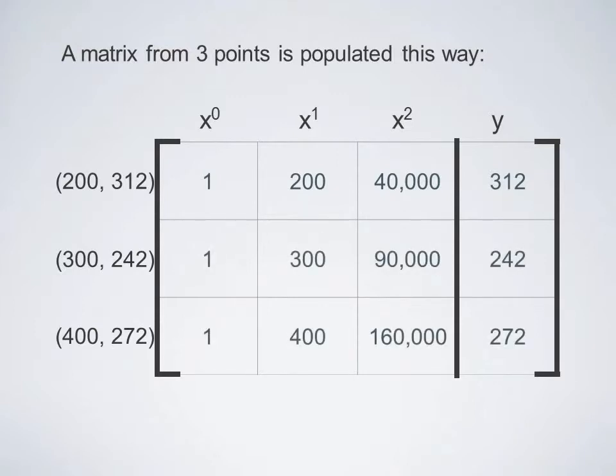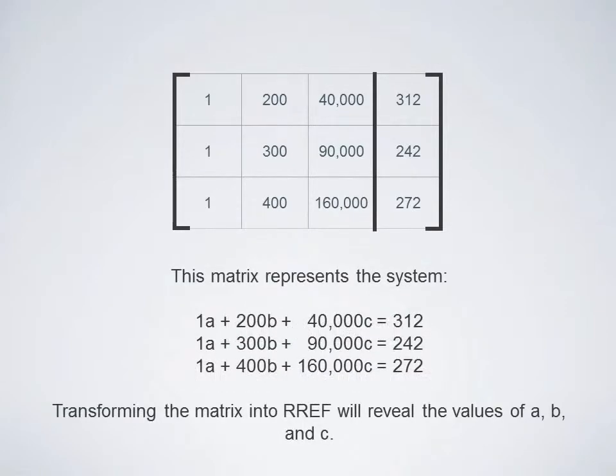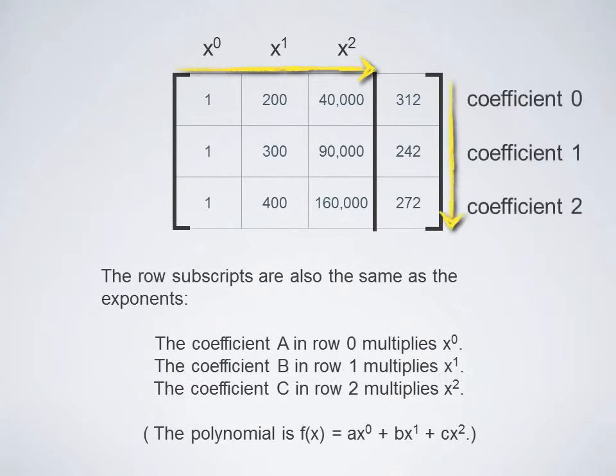After you have this matrix, you can begin to transform it into reduced row echelon form. This matrix simply represents a system of equations. Each row represents a quantity of the unknown variables being added together. And since you have as many rows as you have unknown variables, you have exactly the amount of information that you need in order to solve the system. The column subscripts are the same as the exponents to which x is raised in each column. Likewise, the row subscripts are also the same as the exponents.